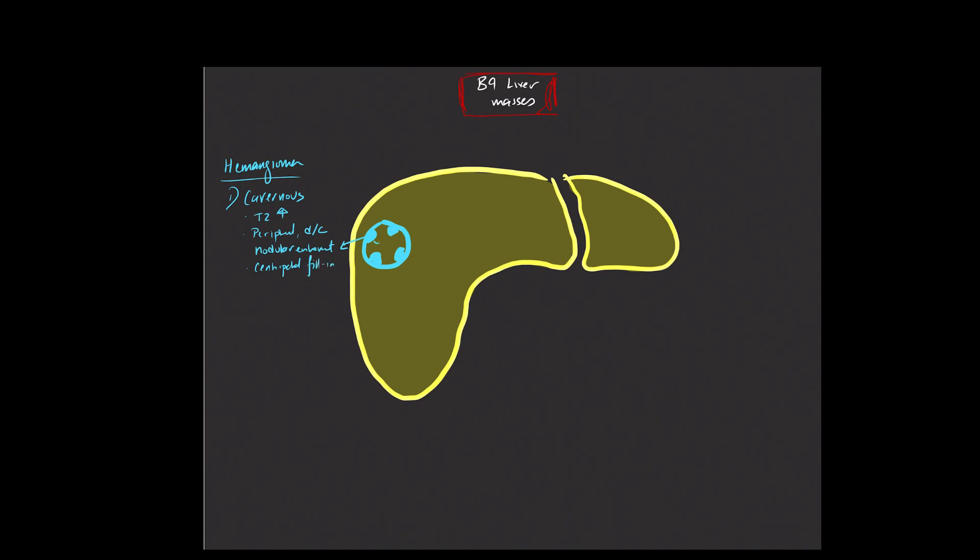As you enhance from the arterial to the portal venous to the equilibrium and other phases, the amount of enhancement within it will follow the degree of enhancement within the blood pool at the time of imaging.